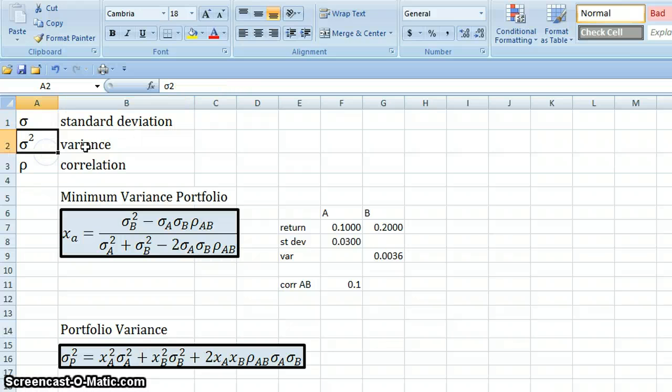We have sigma squared which stands for variance, and this is not a coincidence. The reason the symbol for variance is sigma squared is that it is the square of standard deviation. So variance is the square of standard deviation.